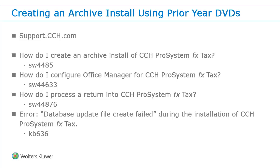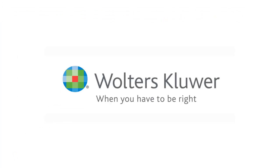For more information on this process, please visit us at support.cch.com and search for these titles or the article numbers listed below them. You will need to configure Office Manager before using tax preparation for the first time. If you have returned files that you have backed up, Article SW 44876 explains how to import them into your new archive installation. Also, if you received a database update file create failed error at the end of the installation, Knowledge Base Article KB 636 explains how to resolve that issue. Again, thank you for watching.